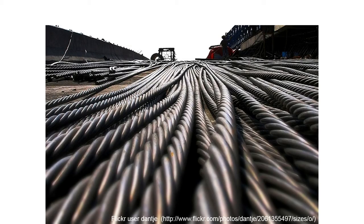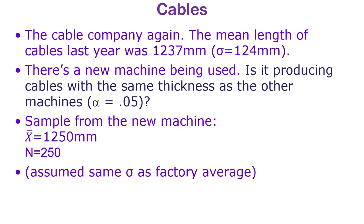Now the cable company example again. The mean length of cables last year was 1,237 millimeters. Something has changed — there's a new machine. Is it producing cables with the same length? We want alpha equals 0.05. We get a sample from the new machine, randomly sampling 250 cables.